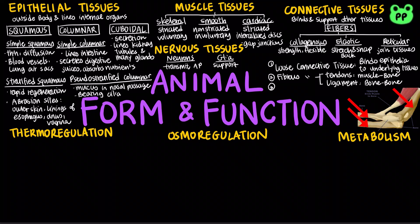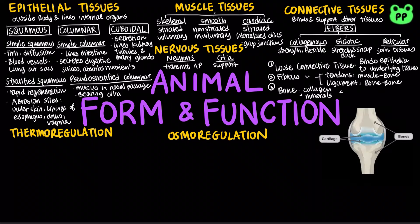Bone is a matrix of collagen and hard minerals including calcium cation, magnesium cation, and phosphate anion. Cartilage is the padding that covers and protects the ends of long bones at joints. It consists of collagen and chondroitin sulfate.